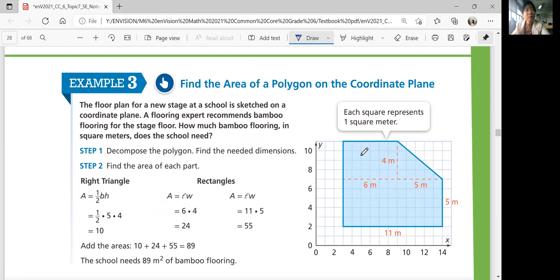Example three, find the area of a polygon on the coordinate plane. The floor plan for a new stage at the school is sketched on a coordinate plane. A flooring expert recommends bamboo flooring for a stage floor. How much bamboo flooring in square meters does the school need? Basically figure out the area. So you can figure out the area of the right triangle here and the rectangle over here and then the bigger rectangle over here. 4 times 5 divided by 2 is 20 divided by 2, which is 10. 6 times 4 is 24. 11 times 5 is 55. You add them all together, you get total area of 89. So you need 89 square meters of bamboo flooring.